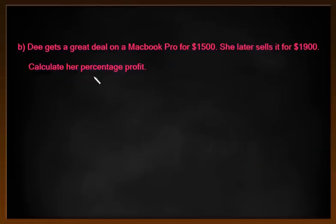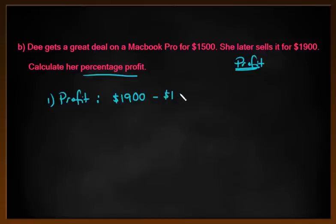Let's have a crack at another question now. Dee is getting a great deal on a MacBook Pro, bit of an Apple theme here, for $1,500. But she later sells it for $1,900. Well, automatically we should think she's getting more money, which means she is making a profit. This question asks to calculate her percentage profit. So once again, first step, we want to calculate what that profit is going to be. In this case, we've got $1,900. I'm going to subtract the original $1,500 that she started with, which means that she makes $400 on top, which is her profit.